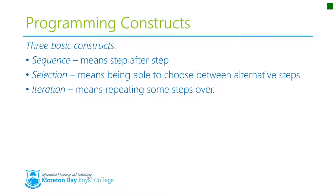There are three basic constructs in programming that we're going to learn about. Those constructs are sequence, selection, and iteration. Sequence means that you do this one step after the other following on one particular path. Selection means being able to choose between alternative steps, and iteration means looping or repeating some steps over and over again.